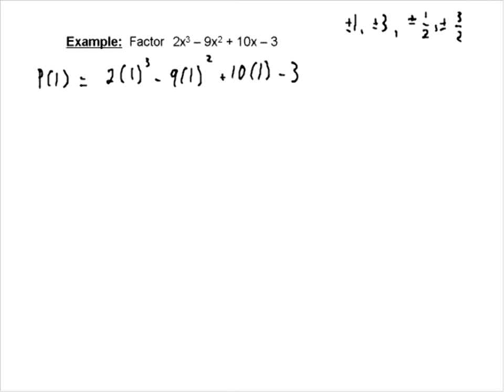2 times 1 cubed minus 9 times 1 squared plus 10 times 1 minus 3 is going to equal 2 minus 9 plus 10 minus 3. And I hope we're getting happy here. Because negative 9, negative 3 is negative 12, plus 12 is going to equal 0.